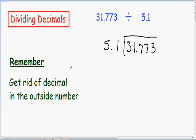And the one thing that you have to remember, and I wrote this for you in green, you have to get rid of the decimal in the outside number. So we have an outside number of 5.1. We need to get rid of this decimal in the outside number. So basically we have to push this decimal point as far right as possible.